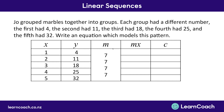Next is the MX column: M is 7, multiplied by X values 1 through 5. So 7 times 1 is 7, times 2 is 14, times 3 is 21, times 4 is 28, and times 5 is 35. Now we look at what we need to do to get from MX back to Y. In this case we need to take away 3 — so 7 minus 3 is 4, 14 minus 3 is 11, 21 minus 3 is 18, 28 minus 3 is 25, and 35 minus 3 is 32. So C is negative 3.